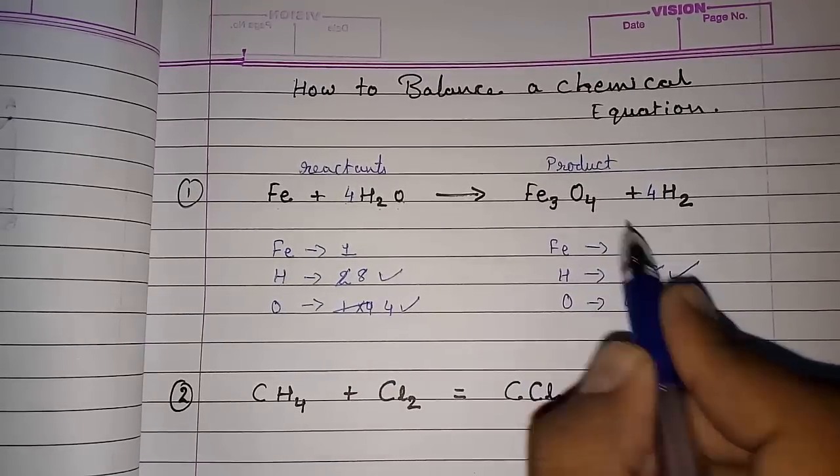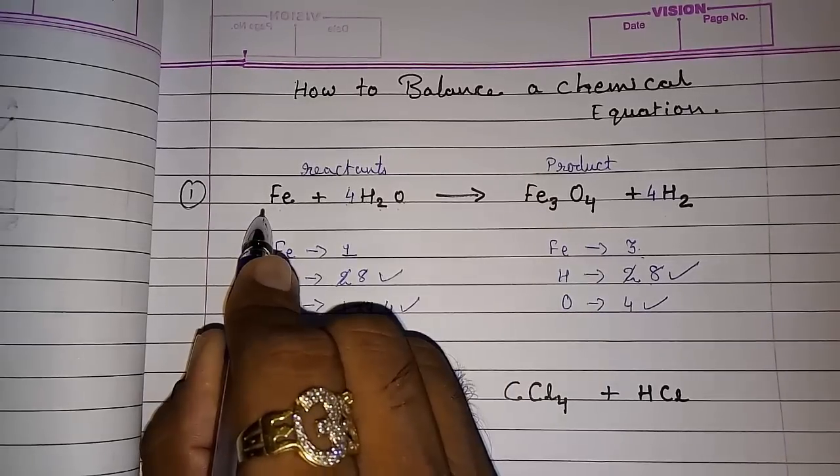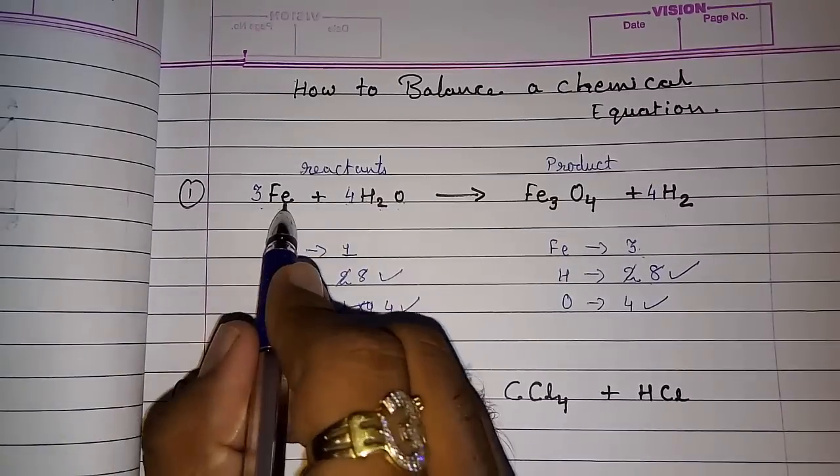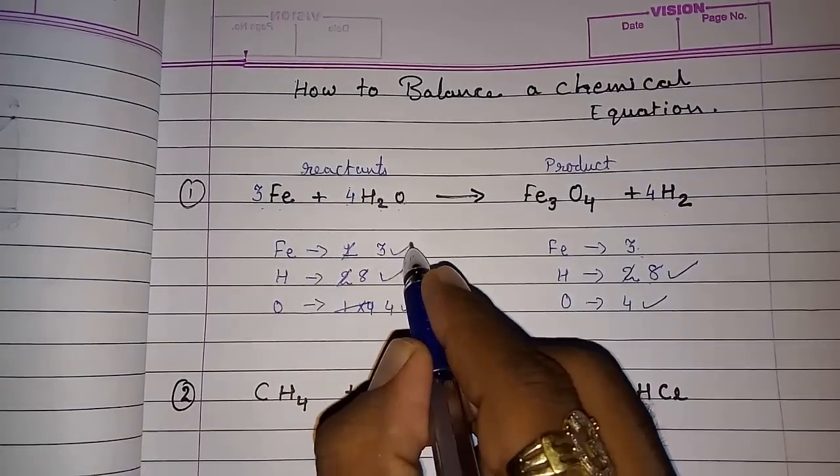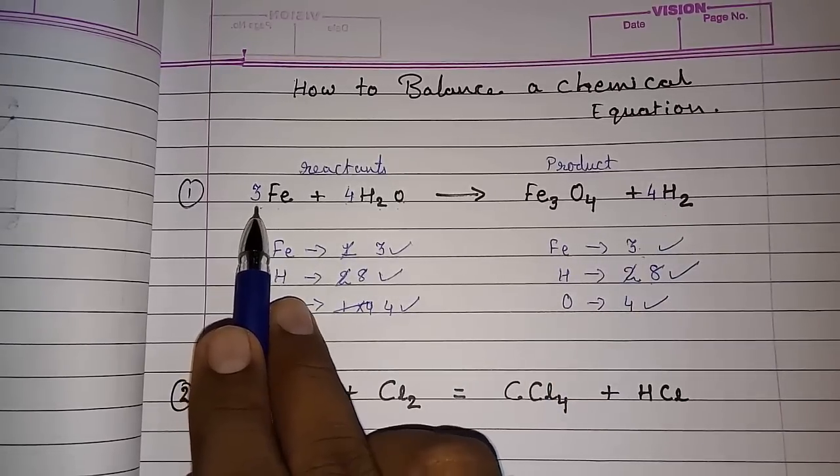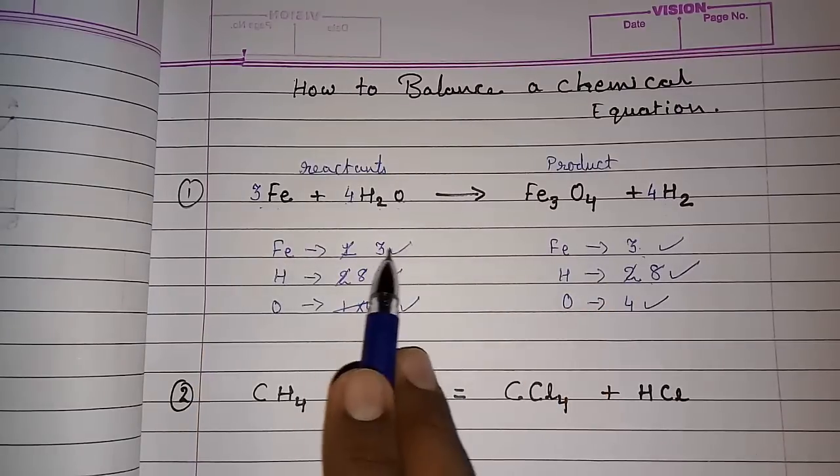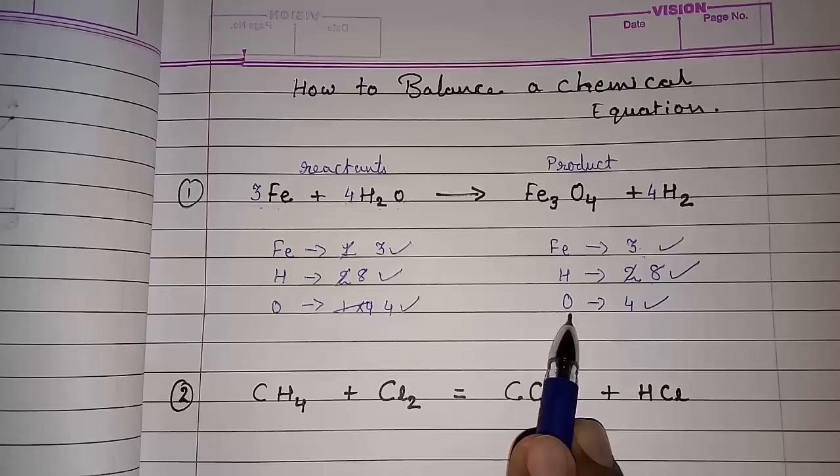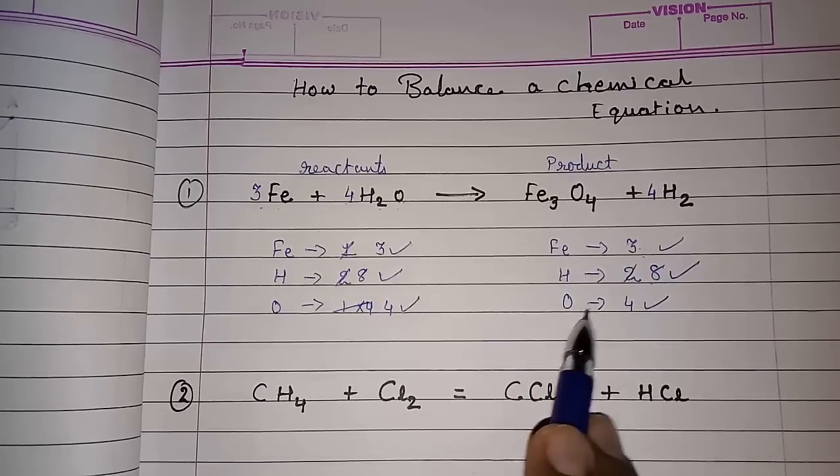Now this Fe three here and here single. So now we can put three here. So this Fe will also become three. Look at three three. So this way we have to arrange and make the equation balance. Fe three, H eight, O four. Here also Fe three, H four and H eight and O four.